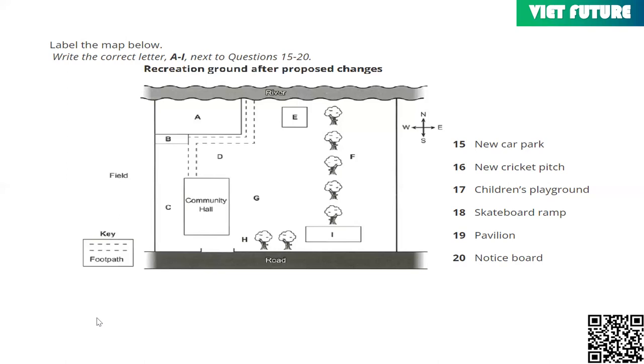So next on the agenda is proposals for improvements to the recreation ground. Councillor Thornton again. Well, since we managed to extend the recreation ground, we've spent some time talking to local people about how it could be made a more attractive and useful space. If you have a look at the map up on the screen, you can see the river up in the north, and the community hall near the entrance from the road.